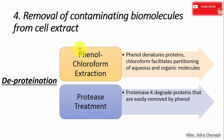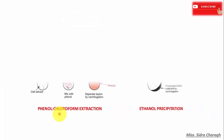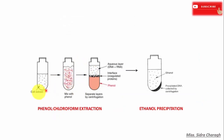In deproteination, we can use different methods like phenol-chloroform extraction. In this method, phenol denatures proteins, while chloroform facilitates partitioning of aqueous and organic molecules. In protease treatment, we use proteinase K enzyme to degrade proteins that are not easily removed by phenol. When we mix the cell extract with phenol, it results in three different layers, and we obtain DNA and RNA in the aqueous layer.